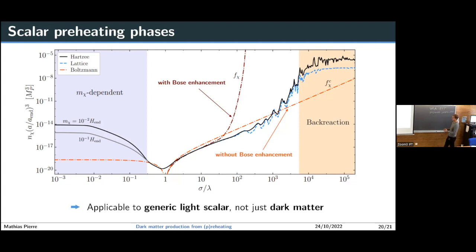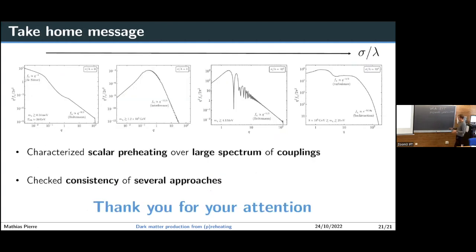This is applicable to any generic light scalar, not just the dark matter model considered here. To compute the relic abundance, we convert the comoving number density into an energy density at the present time. That's it for today — I've shown a snapshot of the different dark matter phase space distributions depending on the coupling regime, and they are all very different. I hope this described decently how the physics generates these features.